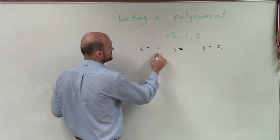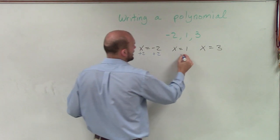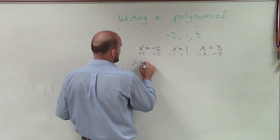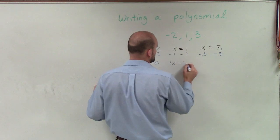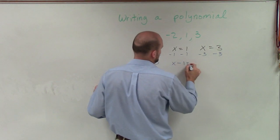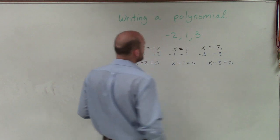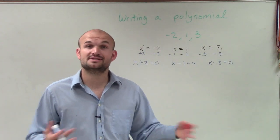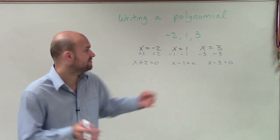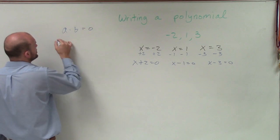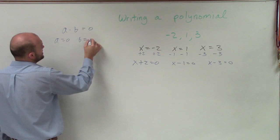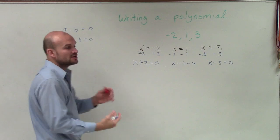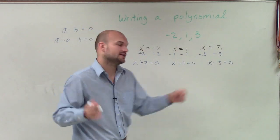So what we're going to want to do is rewrite them as factors. To rewrite them as factors, I'll add or subtract to set them all back equal to 0: x plus 2 equals 0, x minus 1 equals 0, and x minus 3 equals 0. Why would I set them all equal to 0? Remember, we got them equal to 0 by applying the zero product property — when a times b equals 0, we say a equals 0 and b equals 0 and then solve. We already have that. Now we need to write them as factors.